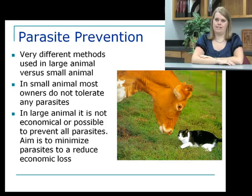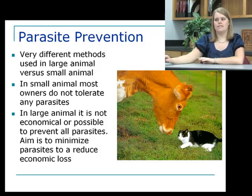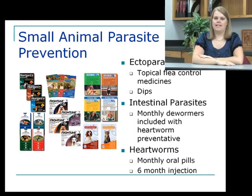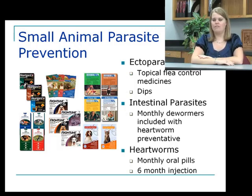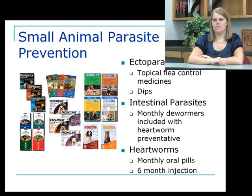How do we prevent parasites? There are very different methods used in large animal versus small animal. In small animal, most owners don't tolerate any parasites at all. For ectoparasites such as fleas, there are topical sprays, spot-on treatments, and dips. For intestinal parasites, we use a monthly dewormer usually included with heartworm pills given every month. For heartworms, you can give an oral pill every month or choose a six-month injection.